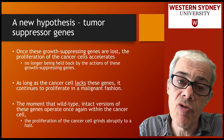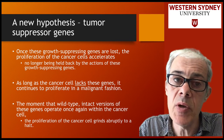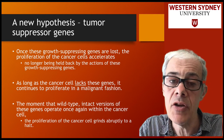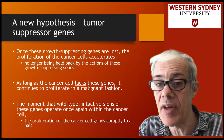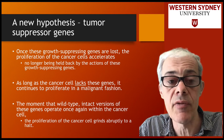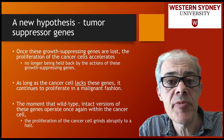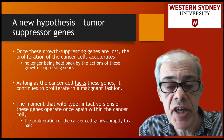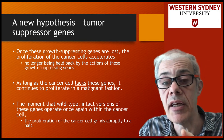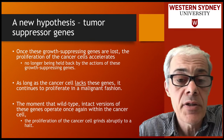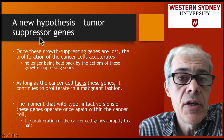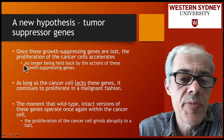Now if you remove the brake — if you mutate the tumour suppressor genes and remove them — then you can't slow down the car, and therefore you get the cell growing out of control. So tumour suppressor genes are like the brakes in the cell, whereas oncogenes are like the accelerators.